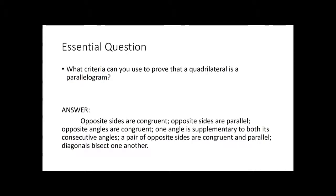Our shortest answer is that the opposite sides are congruent. Let me draw a rough sketch here — we have a quadrilateral, and we're not 100% sure yet if it's a parallelogram. The opposite sides have to be congruent, and they also have to be parallel — this side parallel to that side, and this side parallel to that side. That's one criterion that has to be satisfied.